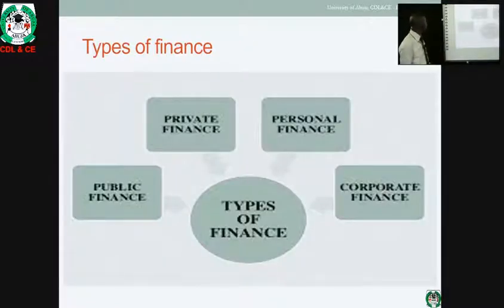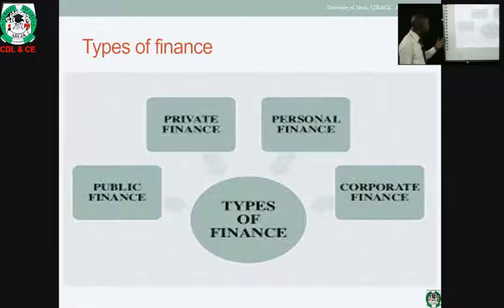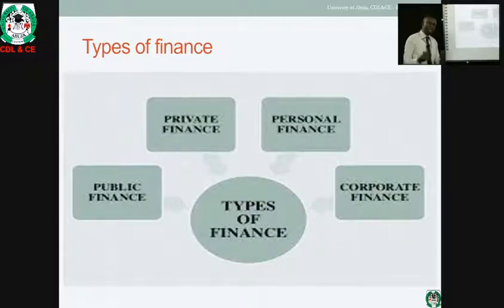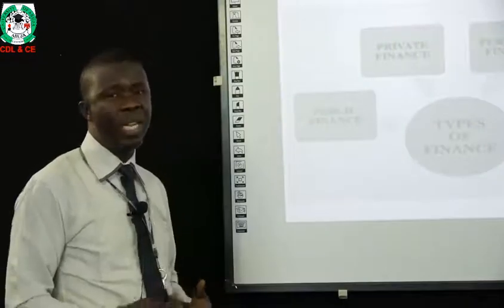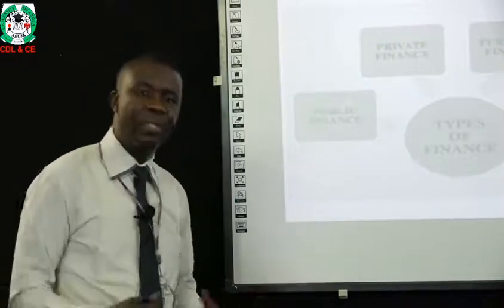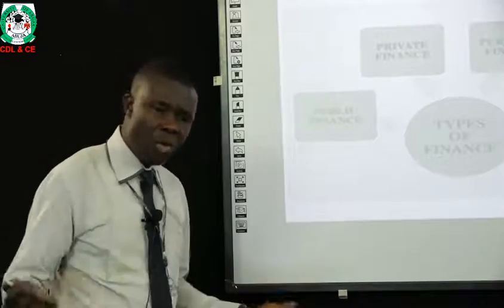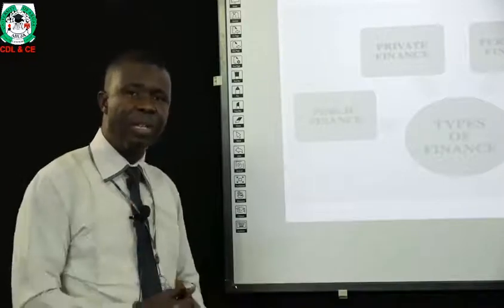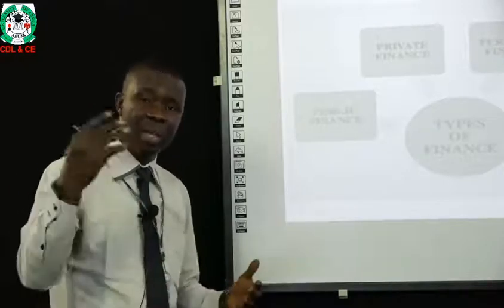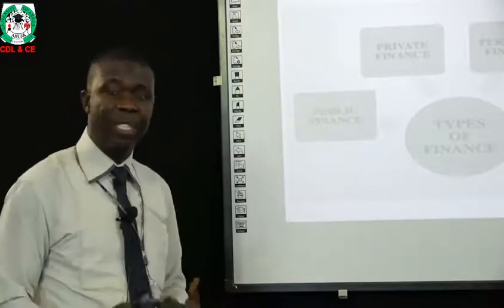Then we look at the types of finance. We have public finance, private finance, personal finance, and corporate finance. Public finance refers to government — its expenditure and revenue. Government raises revenue through taxation and other means, including levies on organizations and personal income tax.